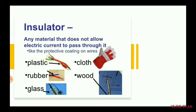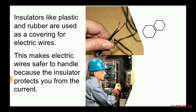You must have seen electricians wearing rubber gloves so that they don't get current while doing electric work. Insulators like plastic and rubber are used as a covering for electric wires. This makes electric wires safer to handle because the insulator protects you from the current.